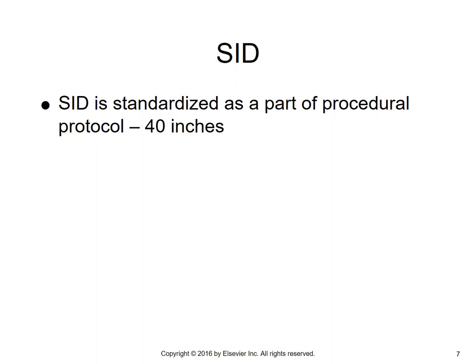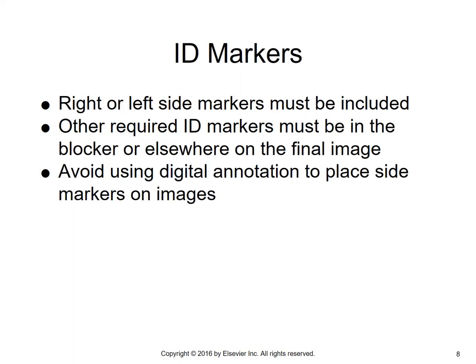The SID used for hip and pelvis is 40 inches as the standardized SID. For ID markers, we want to use our lead right or left markers. Other ID markers must be in the blocker elsewhere around the final image. It is not recommended that you use digital annotation to place the side markers on the image; we should be using our lead markers for this purpose.